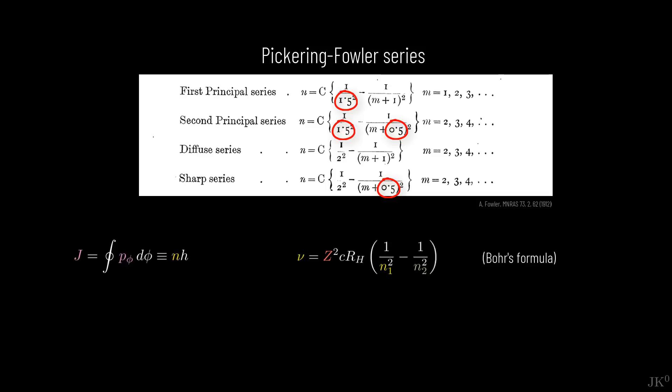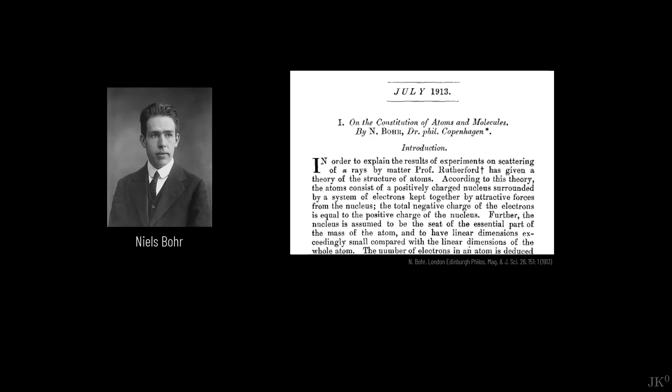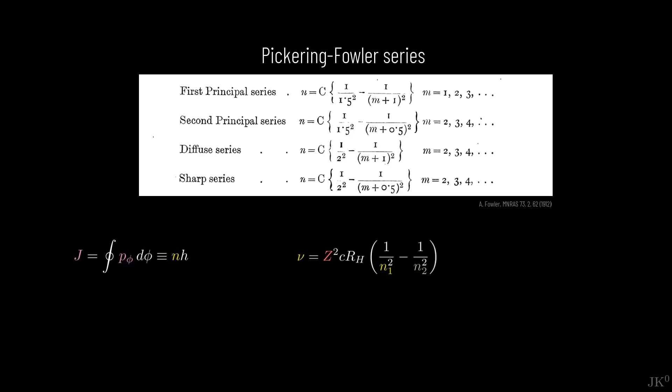The half-integers required by the Pickering-Fowler formulas call into question the most essential concept behind Bohr's model. In other words, despite the success of the model describing normal hydrogen lines, the semi-integers in the Pickering-Fowler series threatened to tear the model apart. Bohr knew that this was an issue that his model would have to address to be fully accepted. But how could Bohr adjust the model to accommodate the peculiar hydrogen lines without compromising its initial success?